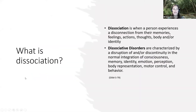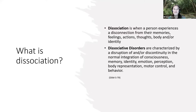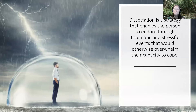What is dissociation? It depends who you ask. But if we talk to the DSM-5 TR, it will say that when a person experiences a disconnection from their memories, feelings, actions, thoughts, body, or identity. Dissociative disorders are more intense — characterized by disruption or discontinuity in the normal integration of consciousness, memory, identity, emotion, perception, body representation, motor control, and behavior. It is extremely all-encompassing. It's actually a strategy that enables people to continue and endure through traumatic and stressful events that would otherwise overwhelm their capacity to cope. The fragmentation of the intense sensorium of experiences that dissociation brings can give people relief from otherwise difficult situations.